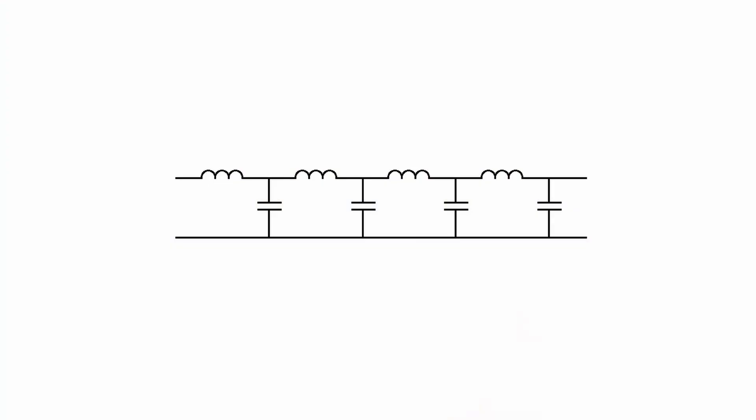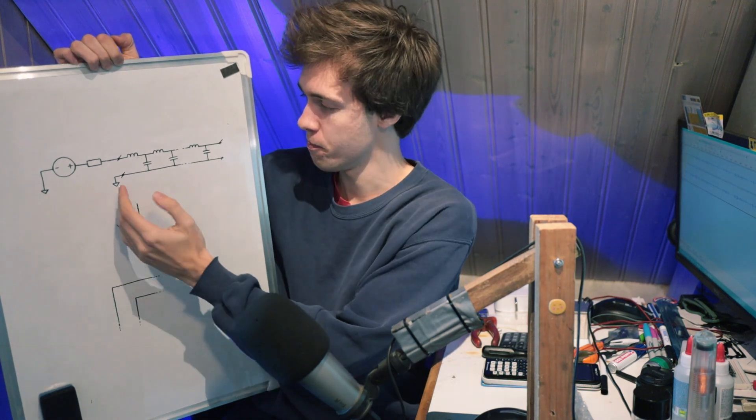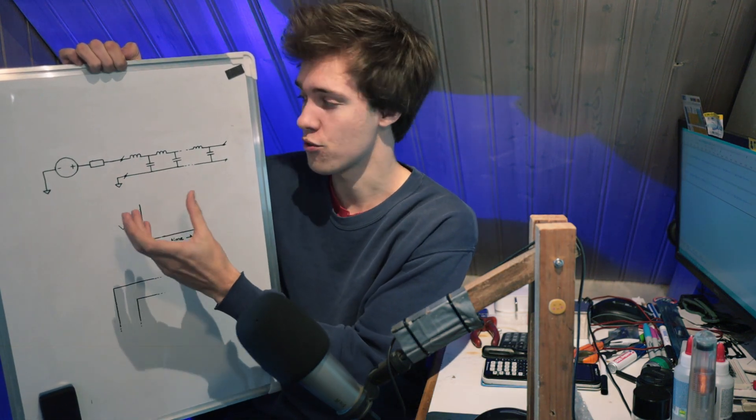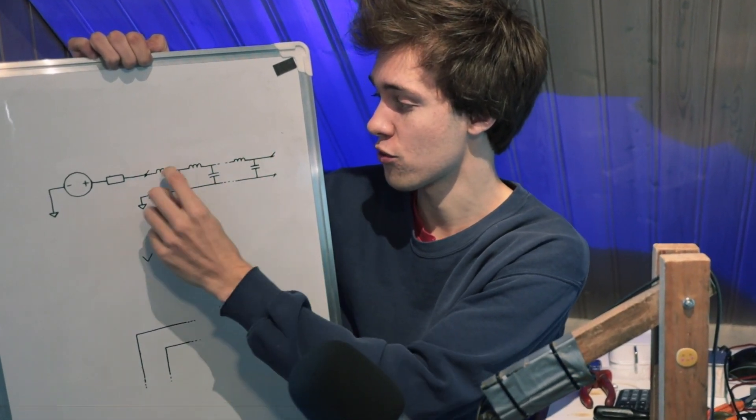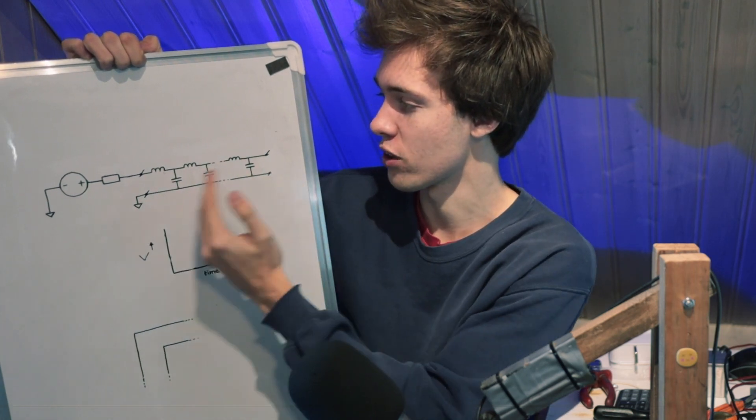Let's take a step back from PCB traces and talk about a regular cable — a cable that consists of two wires. A way that you can model a cable is as this long string of connected inductors and capacitors. So essentially, a cable is just a string of inductors with parallel capacitors along its length.